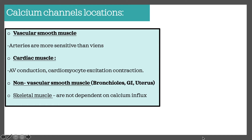However, skeletal muscles are not dependent on calcium influx, so using a calcium channel blocker does not affect skeletal muscle action. Hence why people that take calcium channel blockers for heart conditions such as hypertension or angina pectoris are not affected in their skeletal muscles, even though skeletal muscle involves calcium channel opening and the sarcoplasmic reticulum.